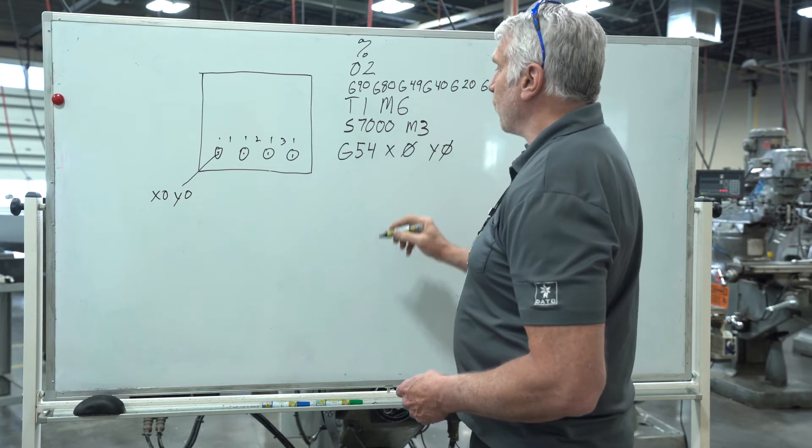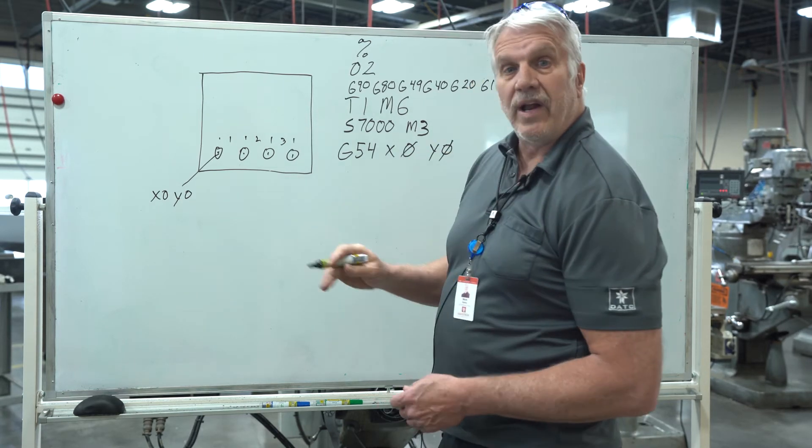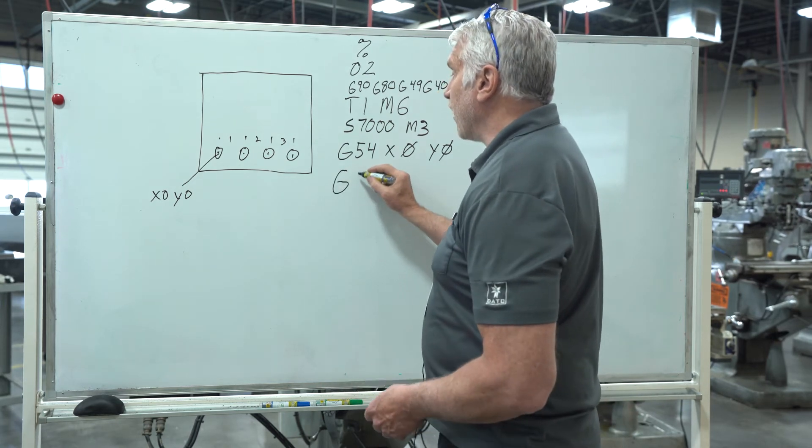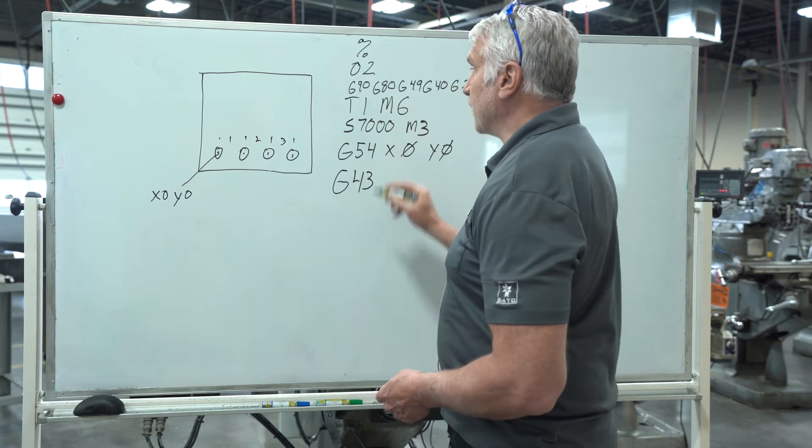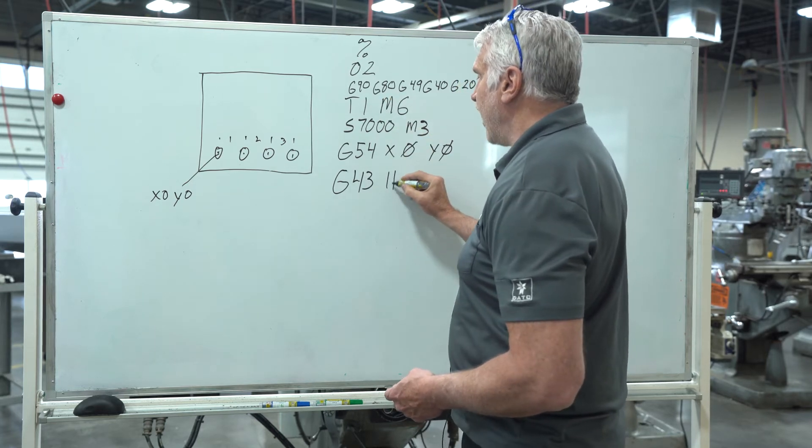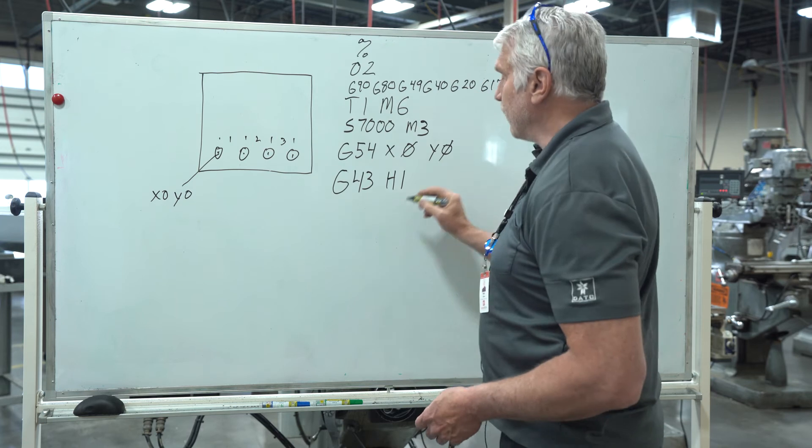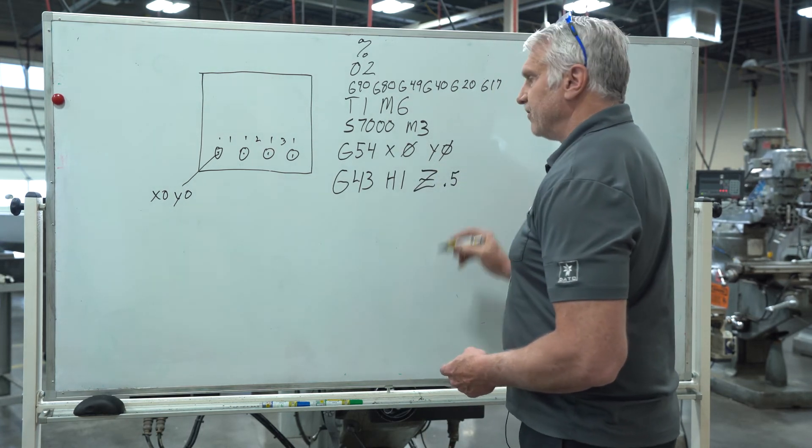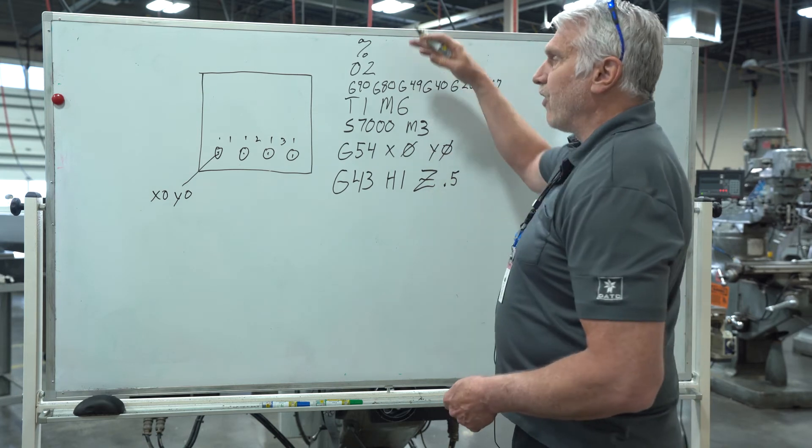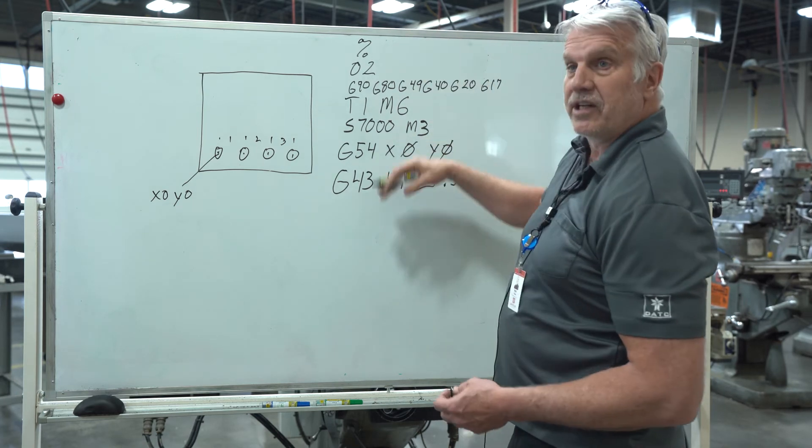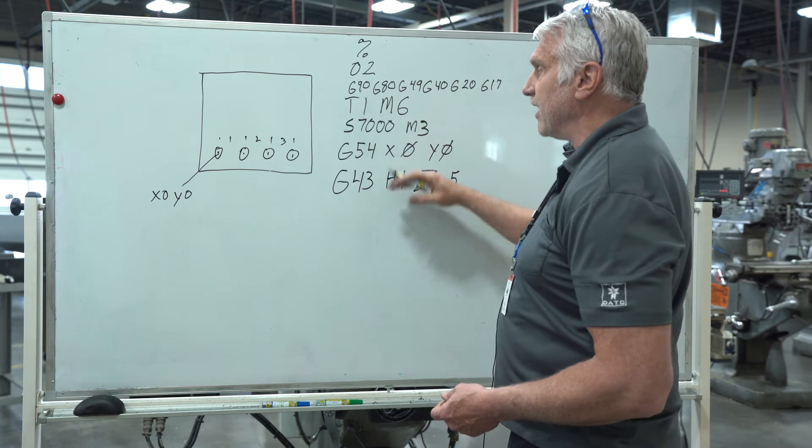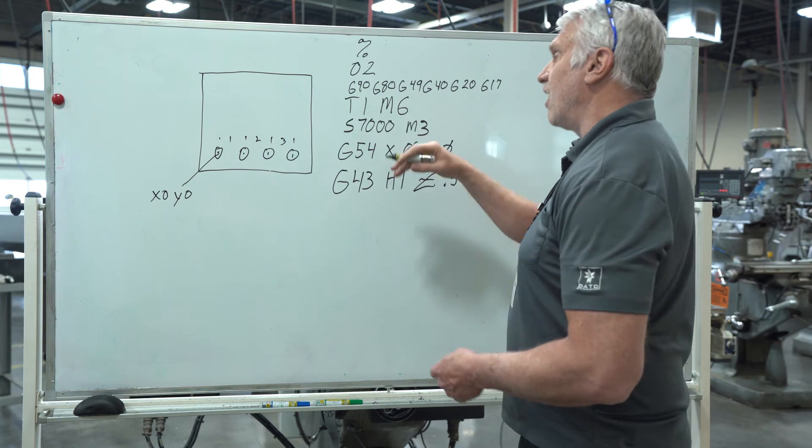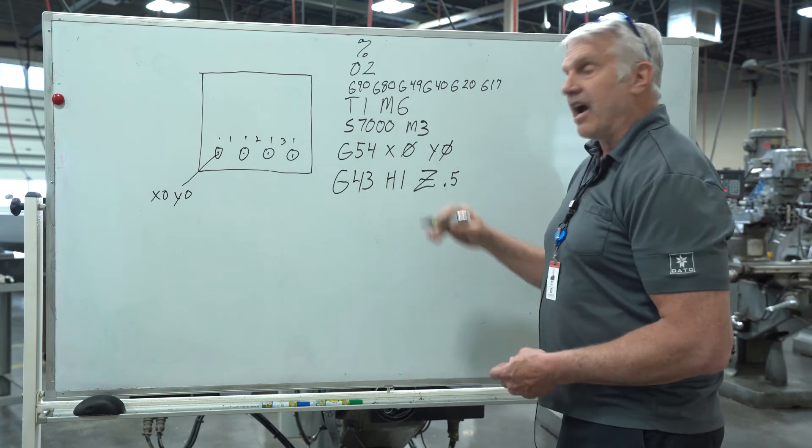The next thing we're going to do is we're going to rapid down to a half inch above our part which is calling off our height offset G43. Since we're using tool one we're going to say it's height offset one and we're going to rapid to Z of a half inch above the part. Now for every tool we do, this is what we're going to use: work safety line, call up the tool, turn on the spindle, call up our work offset and our height offset.